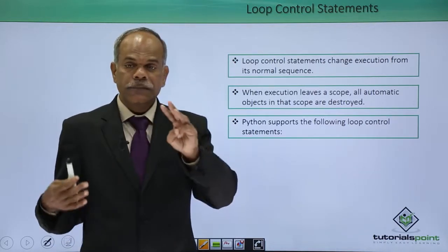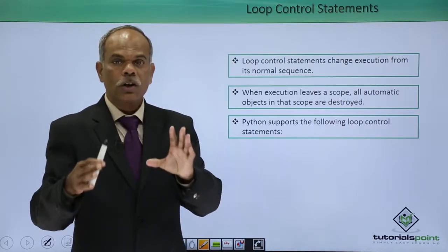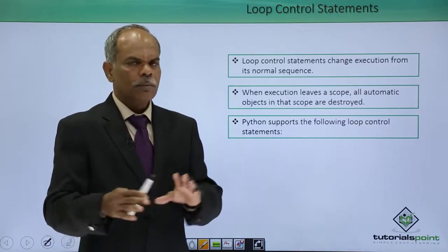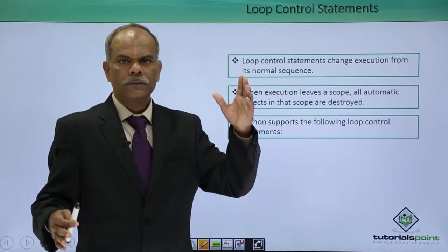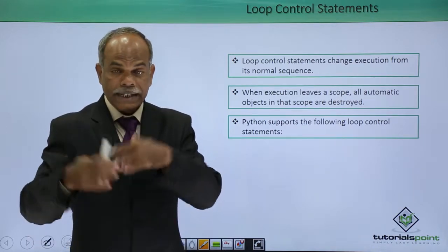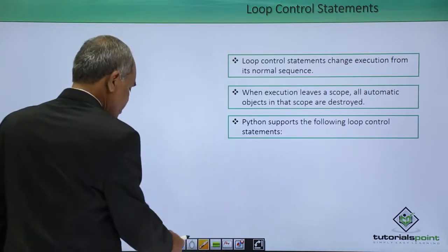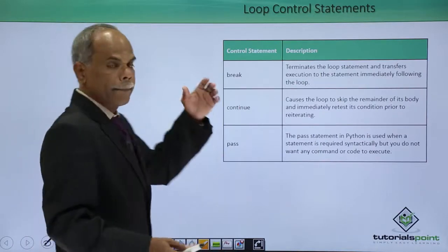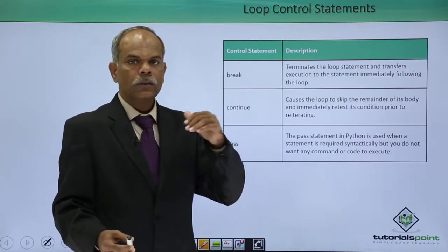Actually, there are three different statements in Python to control the behavior of the loop. Normal behavior is to begin and go up to the end value, but that can be changed by these three statements: break, continue, and pass.